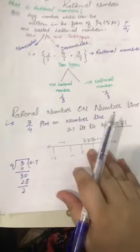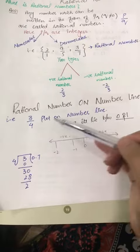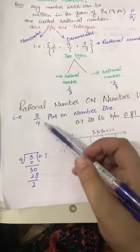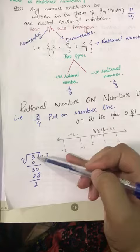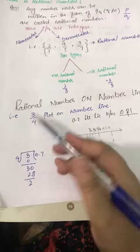So what should we do? 3/4, how do we put a plot on this number on number line? Okay, we divide this number 3 by 4. 3 is a dividend and 4 is a divisor. 4 is a greater number.